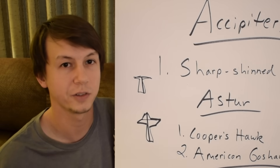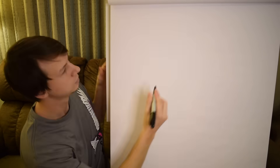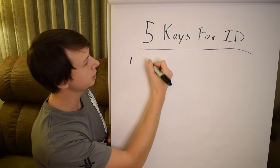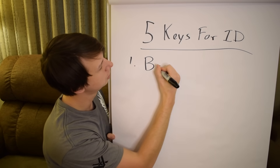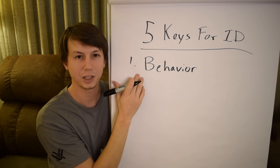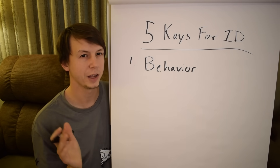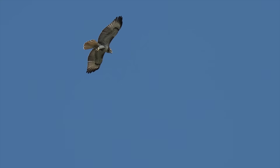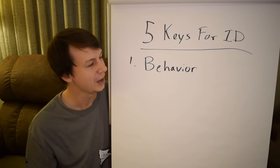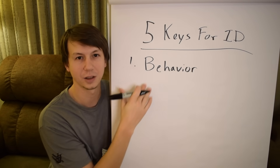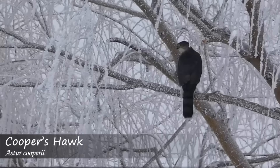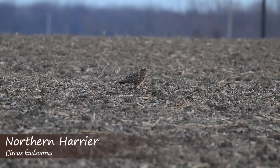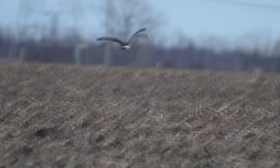Now let's move on to the five keys for identification. Key number one is behavior. How that hawk is behaving is going to tell you a lot about what species it might be. If you're driving along and it's on the freeway in the east, it's probably a red-tailed hawk. If it's hunting in your backyard, it's likely a Cooper's hawk or a sharp-shinned hawk. If it's flying over the marsh, it's probably a rough-legged hawk or a northern harrier. Behavior really helps key in on what species you might be seeing.